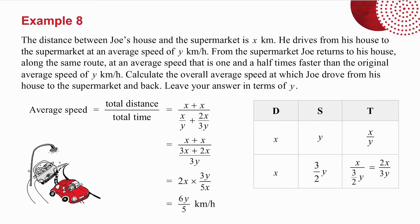So let's go slowly. The distance between Joe's house and the supermarket is x kilometers. So the first thing I can do is fill in x for the distance. He drives from his house to the supermarket at an average speed of y kilometers per hour. Which means I can fill that in. And remember, the time is distance divided by speed. So I've got a distance of x. I've got a speed of y. Which means my time is x over y.